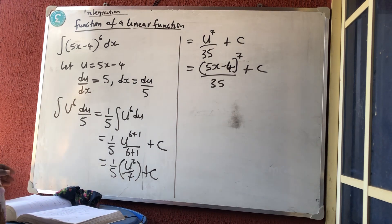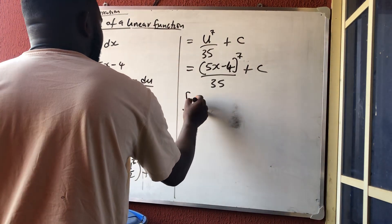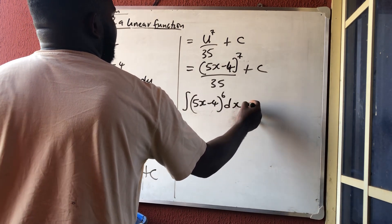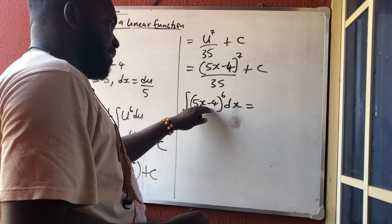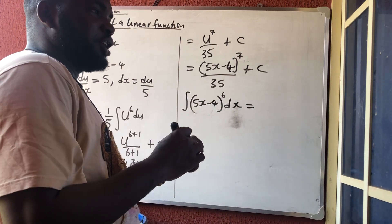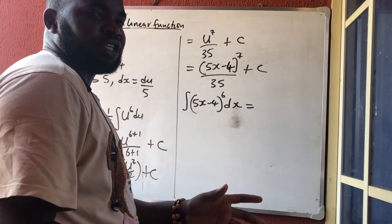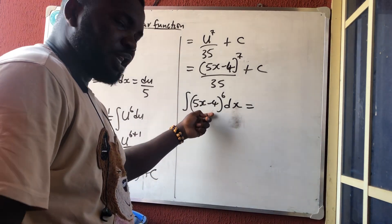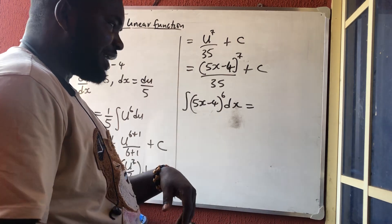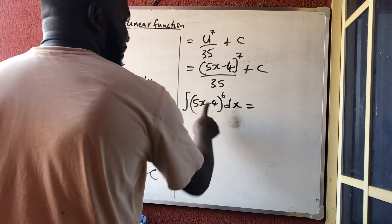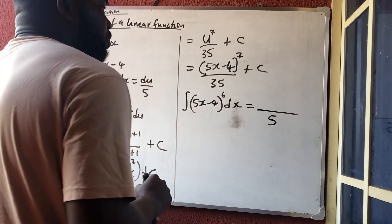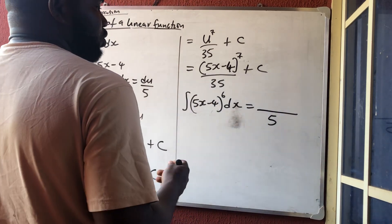That was the long method. The shortcut: I have the integral of (5x − 4) raised to power 6 dx. Whenever you have a linear function raised to a power, the rule is: differentiate the bracket inside, use that result to divide, and integrate everything normally. In differentiation we differentiate the bracket and multiply, but in integration we differentiate the bracket, use it to divide the integral of everything.